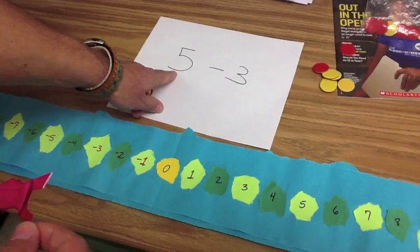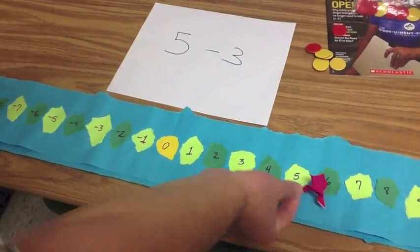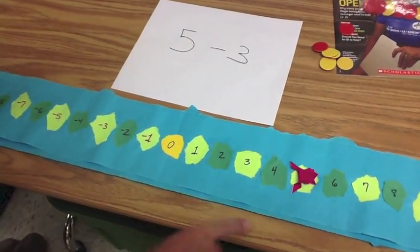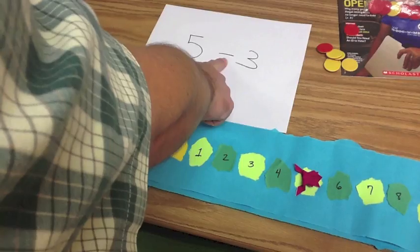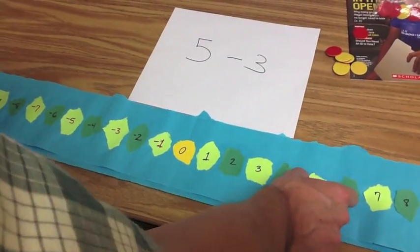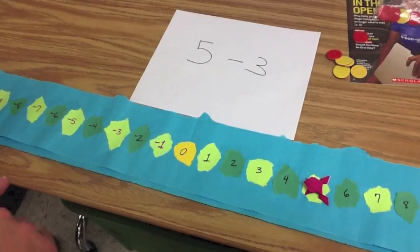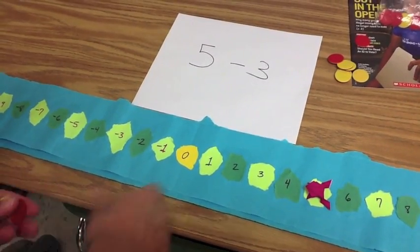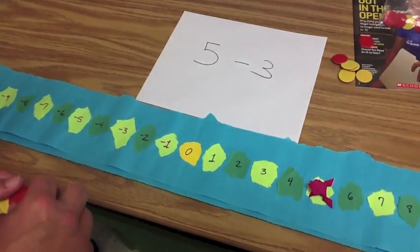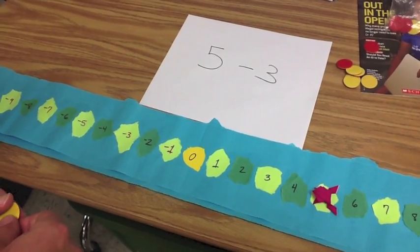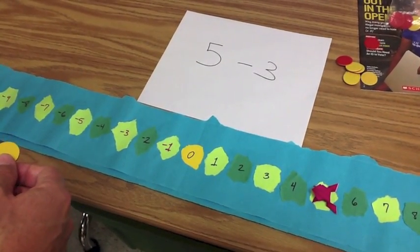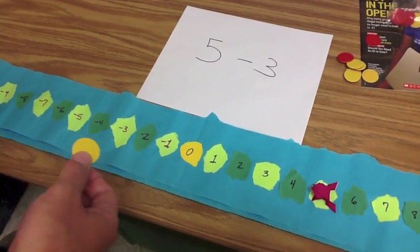First number is still going to tell us where to start. So we're at five. Now yesterday, our math frog was happy, but now he's sad. So he's going to face towards the negative. Everything is dark clouds for him. But our second number still tells us how many jumps he's going to take. How many? He's going to take three.